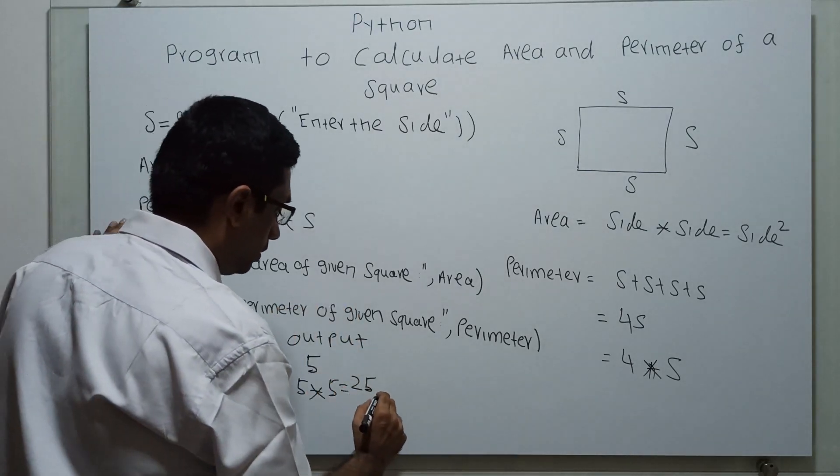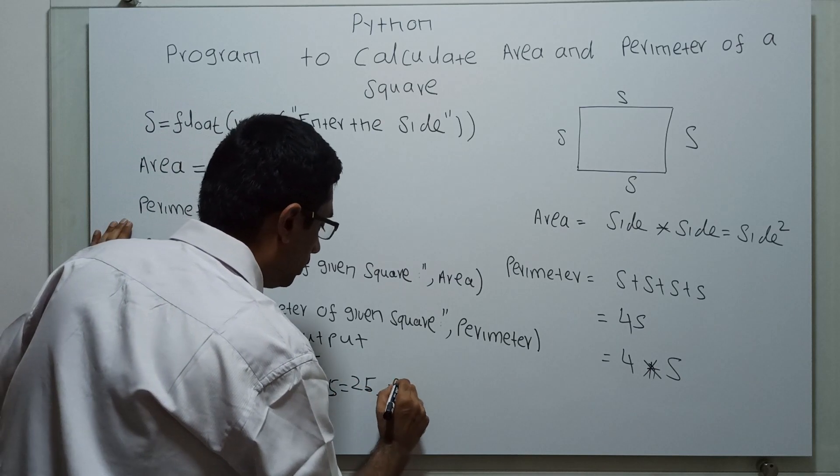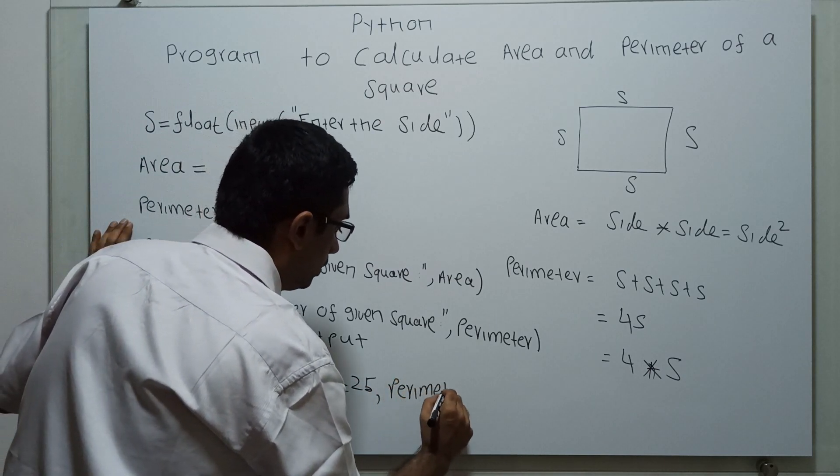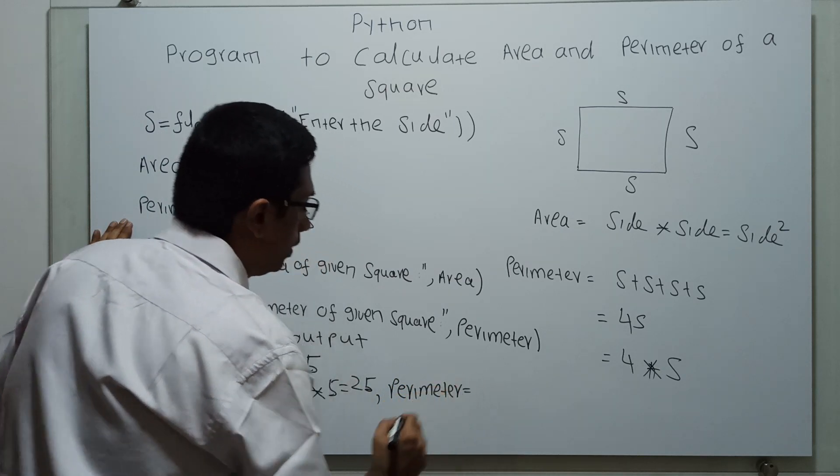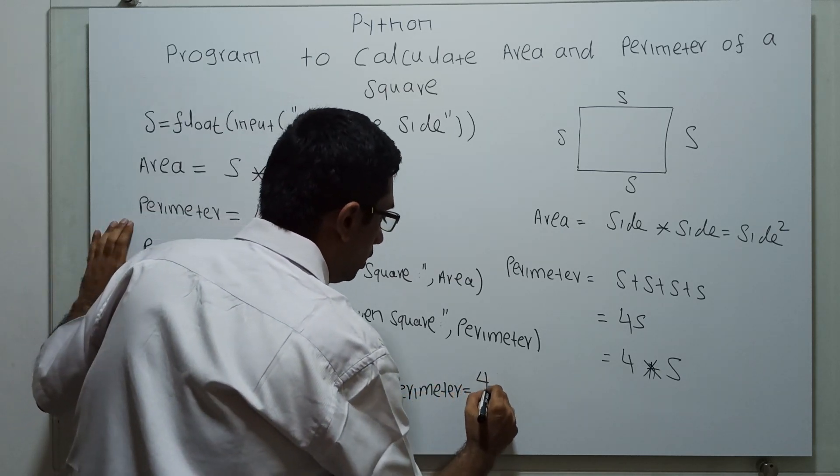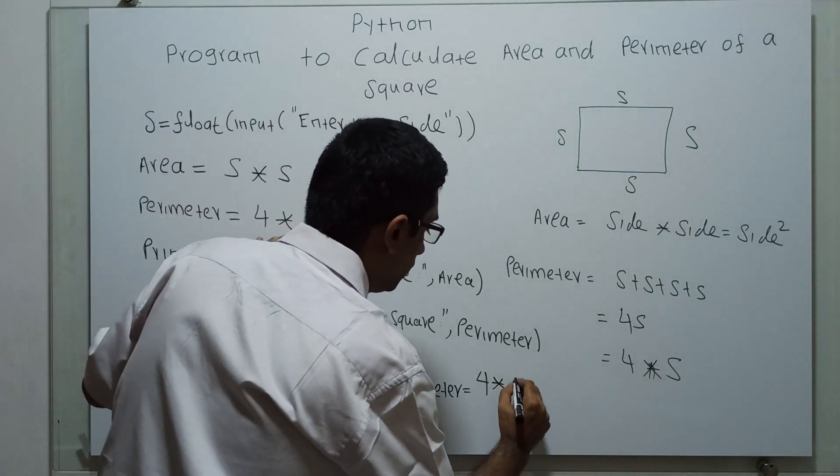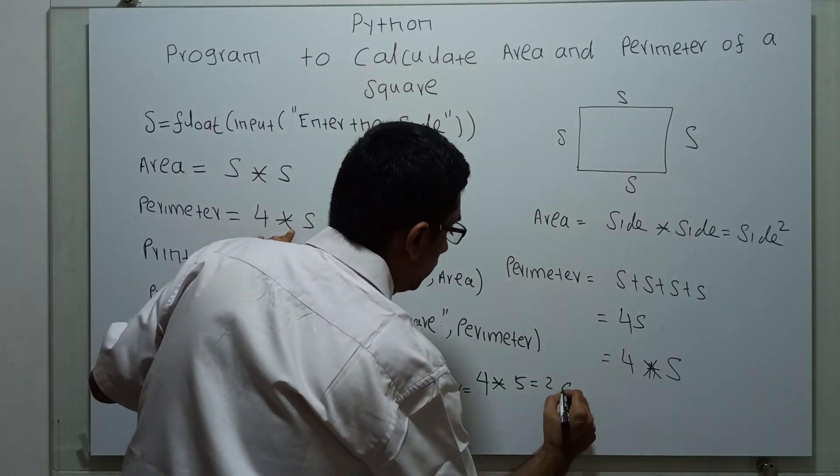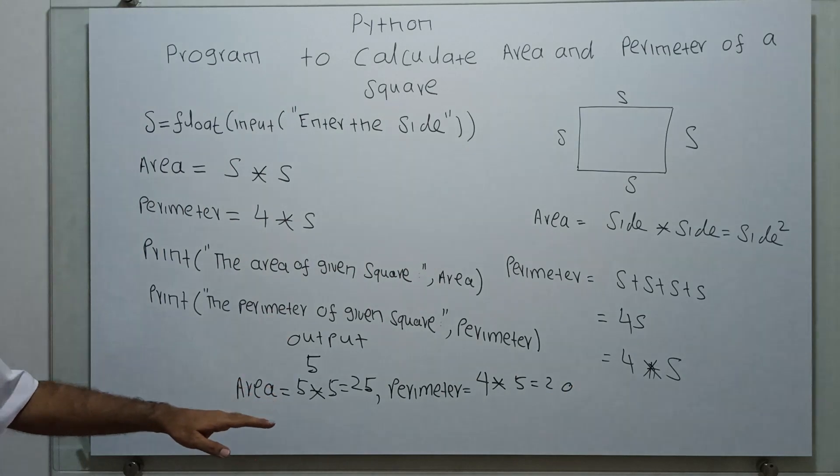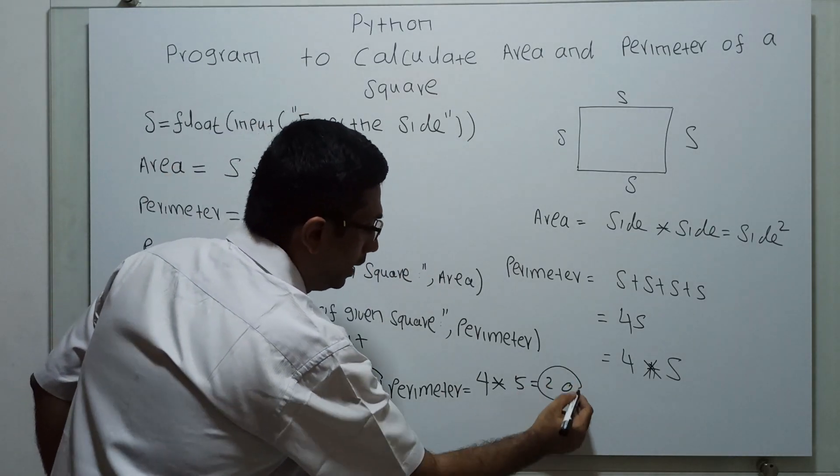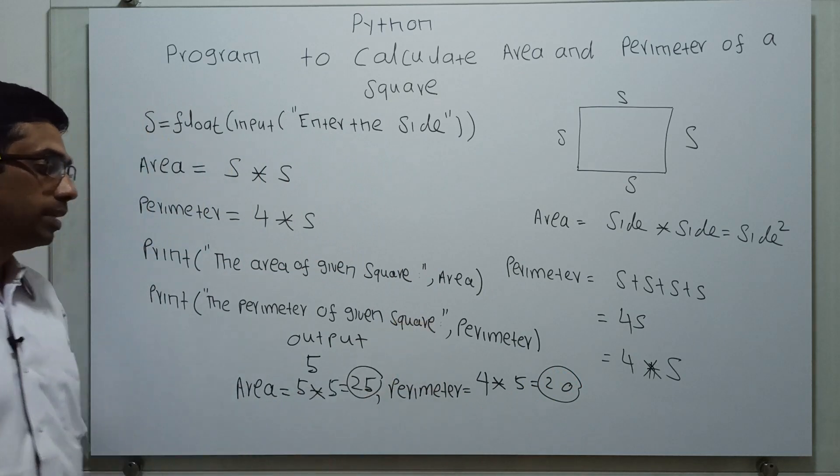Perimeter, for given input 5, perimeter equals 4 into S, 4 into 5, which is equal to 20. So when I give 5, I get 25 and 20. Area 25, perimeter 20 is the output.